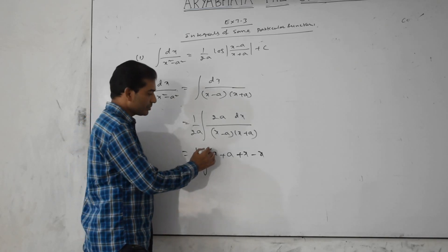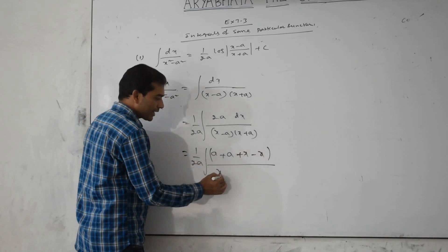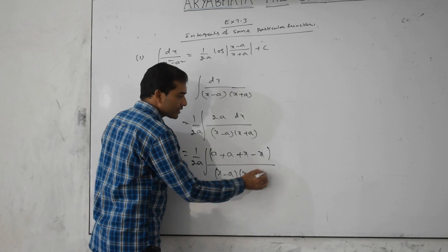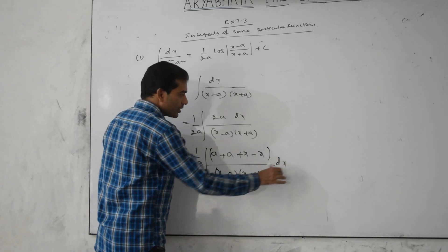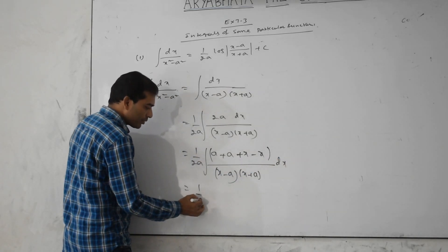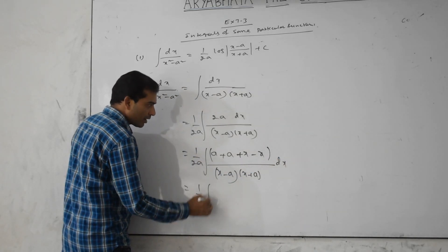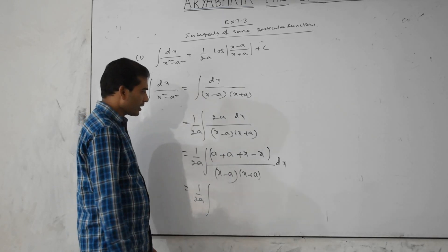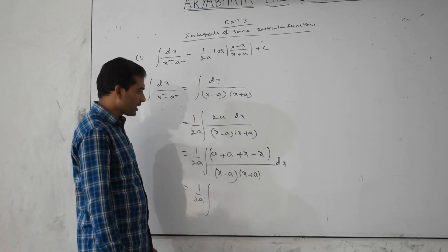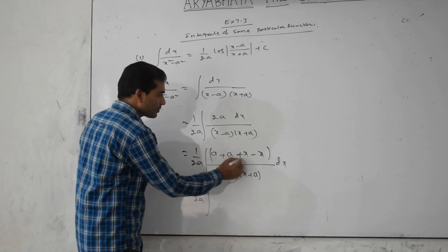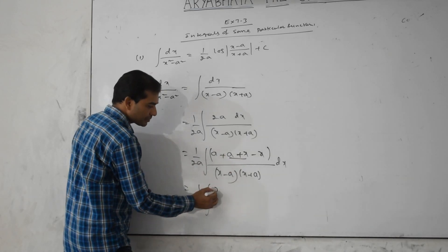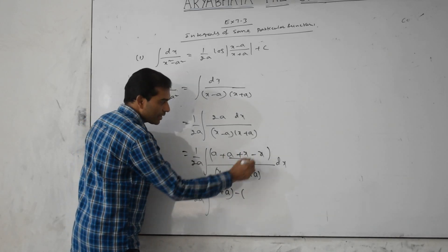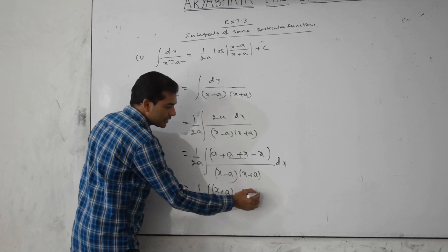Divide by (x minus a) into (x plus a). Which is equal to 1 by 2a, writing (x minus a) and (x plus a) together, with minus taken common as (x minus a).